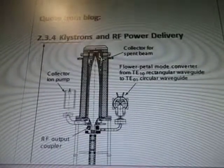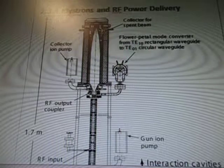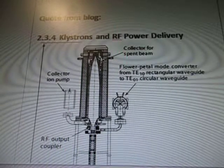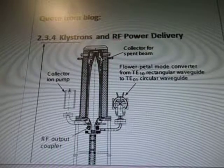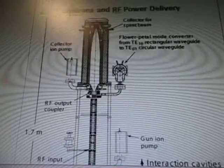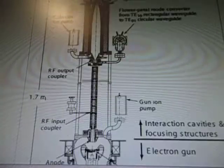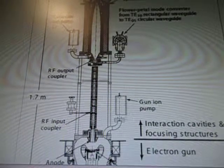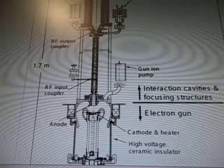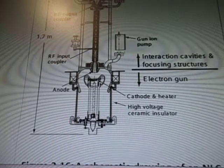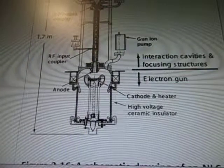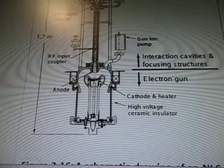Quote from blog — Klystrons and RF power delivery. This is a collector for spent beam. Flower petal mode converter from TE10 rectangular waveguide to TE01 circular waveguide. Collector ion pump, RF output coupler, gun ion pump, RF input coupler, interactions, cavities, and focusing structures, electron gun, cathode and heater, high voltage ceramic insulator, and anode.